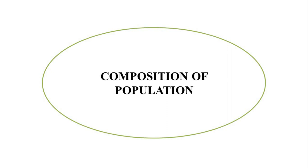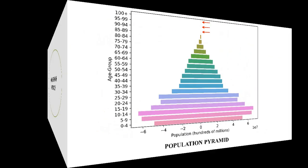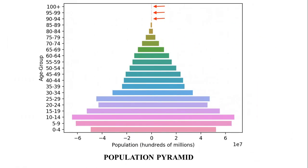This we come to know through the population pyramid. The population of a country can be described on the basis of age, sex, literacy rate and employment. Age, sex, literacy, etc. represent the composition of population.